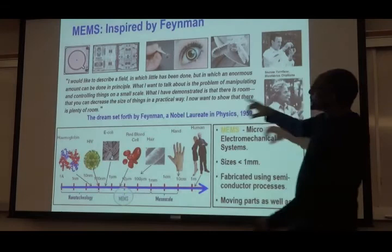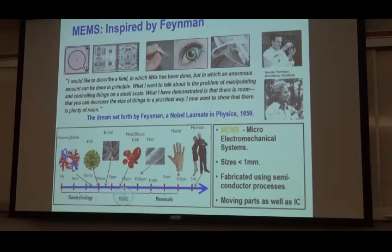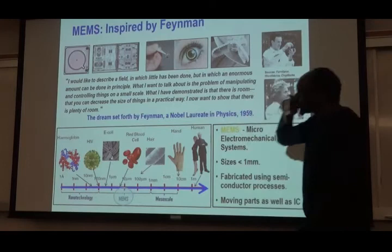What Feynman demonstrated is that there is plenty of room — the talk is also called 'There's Plenty of Room at the Bottom.' He said there is plenty of room when you decrease the size of things in a practical way. You can miniaturize things, miniaturize devices, miniaturize processes. He wanted to show that there is plenty of room.